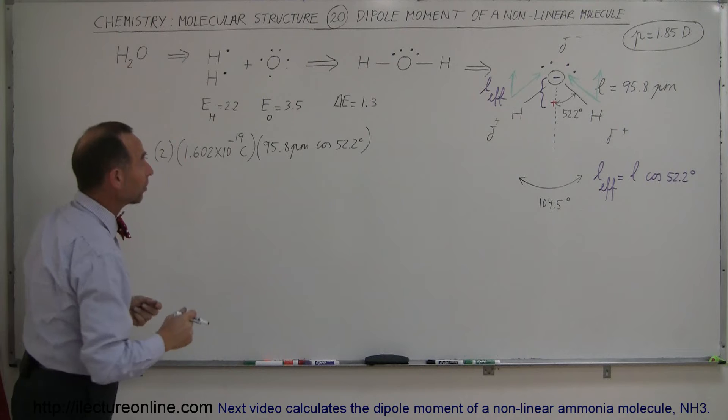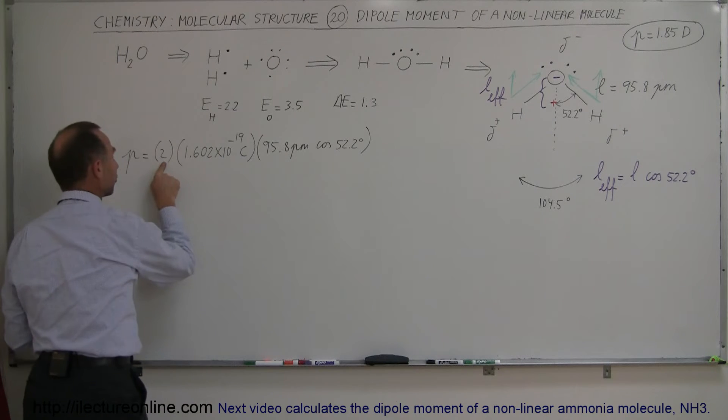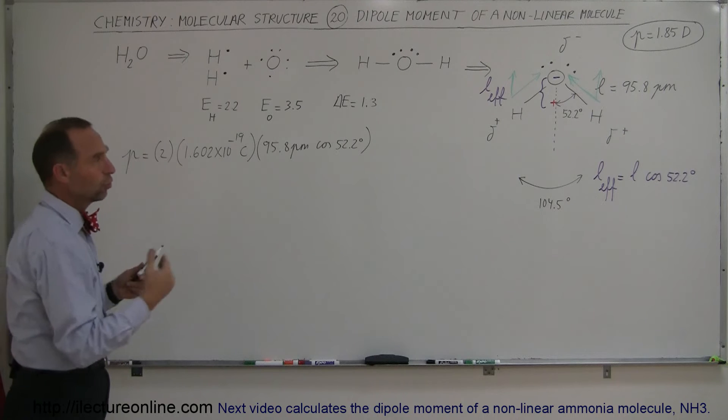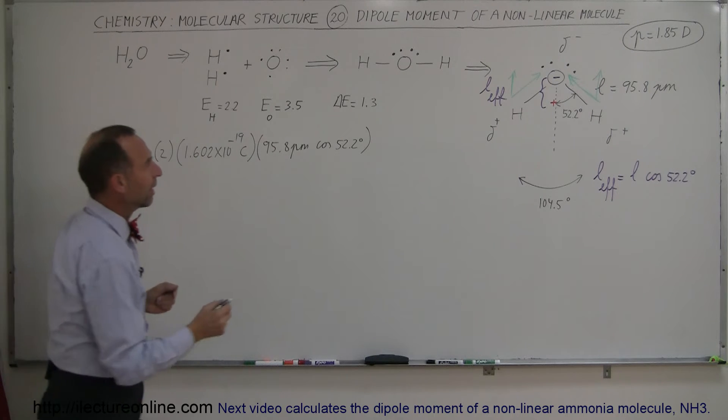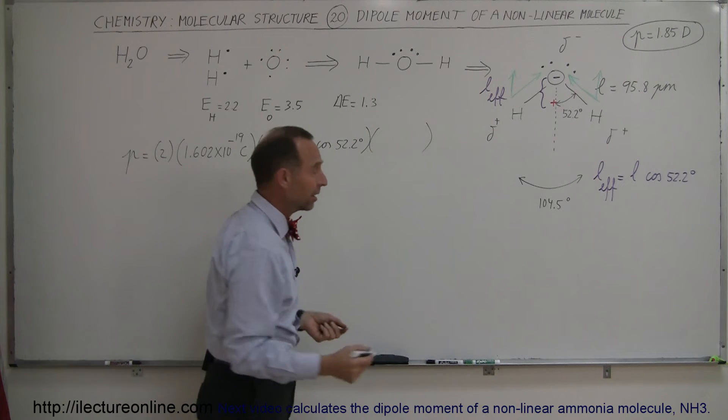So we have the charge times the length. That's the equation of the dipole moment. We have to adjust the length to have the effective length, and we're going to multiply times two because there's two hydrogens, there's two bonds there. And then we have to multiply times the percent ionic right there. So how do we find the percent ionic?